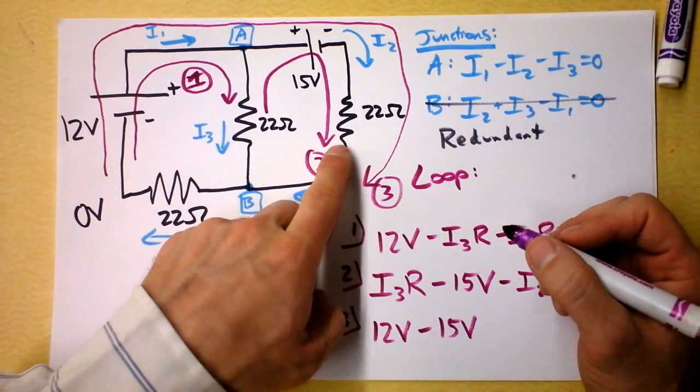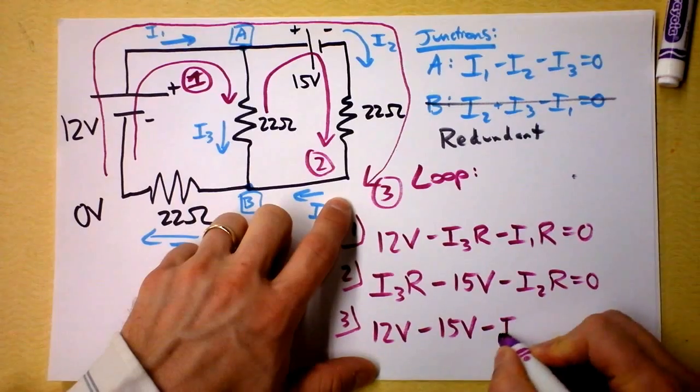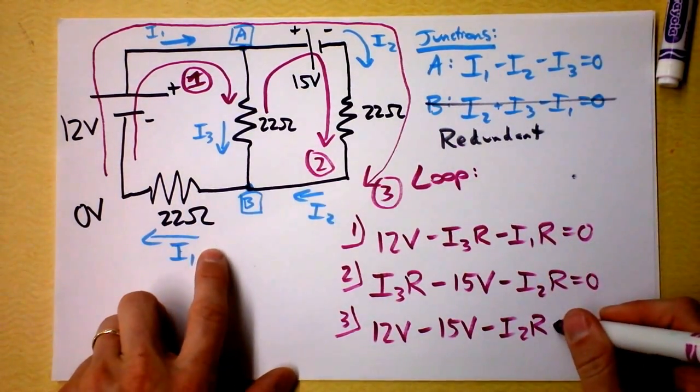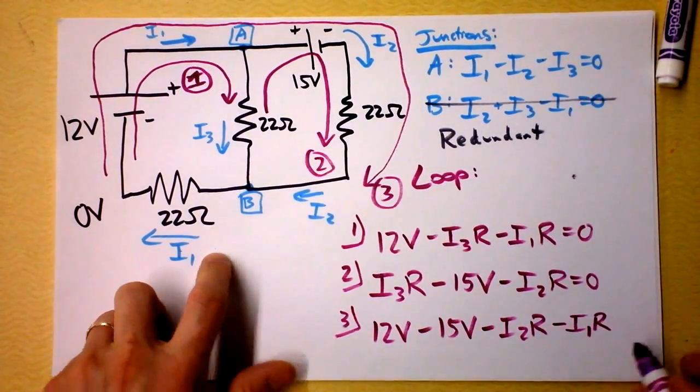And then I'm going through this resistor as a voltage drop in the direction of the current. So I subtract I2 times R. And my final resistor I need to go through is going to subtract I1 times R.